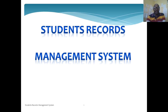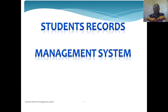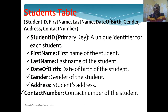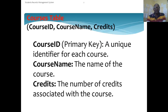So guys, these are the tables. Our system will be a student records management system. We shall have a students table which will contain a student ID as the primary key, first name, last name, date of birth, gender, address, and contact. That is the first table — the students table.